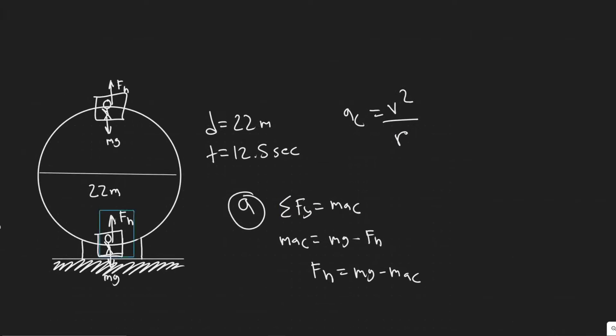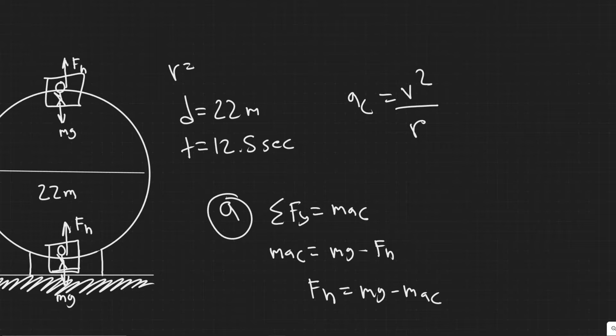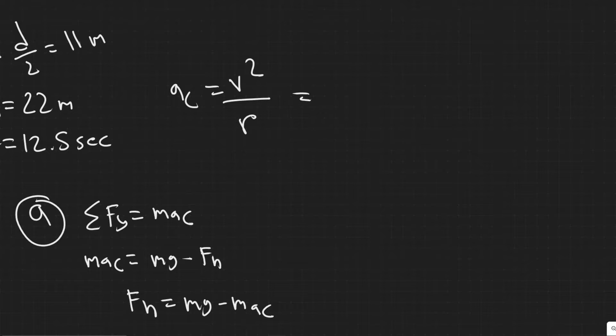We know the radius is just 11 meters, right? Because you know radius equals half the diameter, you should know that. So it's 11 meters. And then we need the velocity. So if this is 11, we need the velocity now.